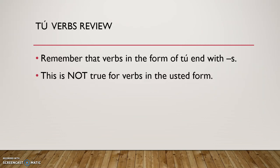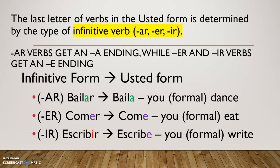We know that verbs in the form of tú end with S, but this is not true for verbs used in the usted form — they're in two different forms, so no S. The last letter of verbs in the usted form is determined by the type of infinitive verb, either AR, ER, or IR. AR verbs get an A ending, and ER and IR verbs get an E ending.